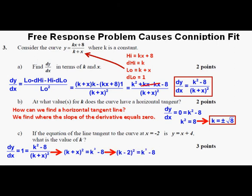Now substituting negative 2 for x, we have (k minus 2) squared equals k squared minus 8. Expanding, we have k squared minus 4k plus 4 equals k squared minus 8. Subtracting k squared from both sides, then subtracting 4 from both sides, the 4's cancel on the left, leaving negative 4k equals negative 12. Dividing both sides by negative 4, we get k equals 3, which we box in as our correct answer.